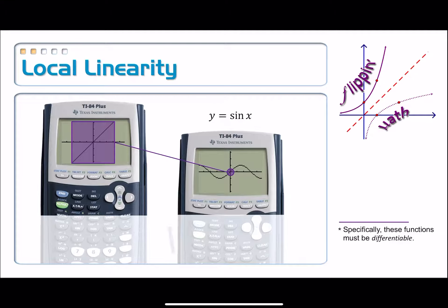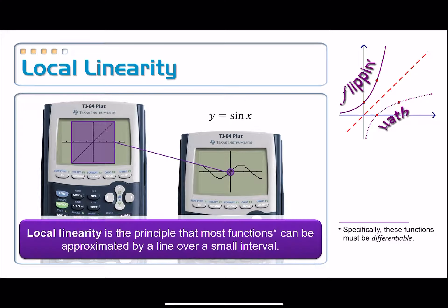All right, so let's write something down for local linearity. It simply means that most functions can be approximated by a line over some small interval. And notice that there is a little footnote there about most functions. Which functions are we talking about? Not every single one? No. So specifically,